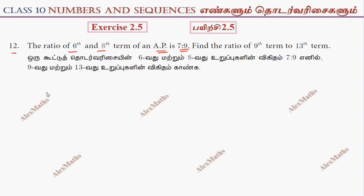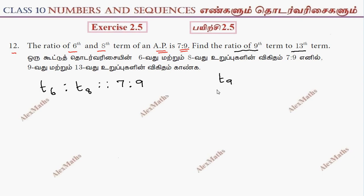We are going to find T6 is to T8, which is the ratio of 7 is to 9. Now, we need to find the ratio of the 9th term to the 13th term, that is T9 by T13.